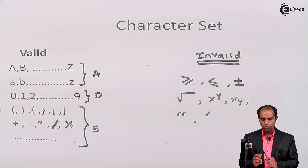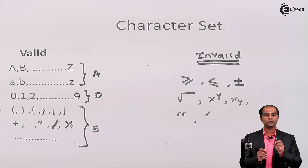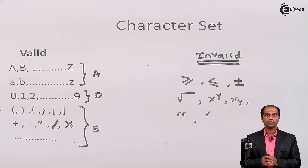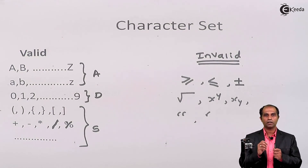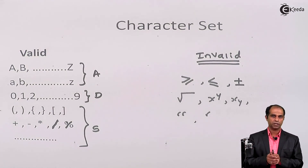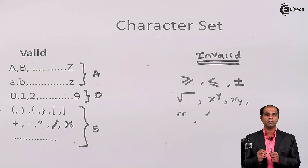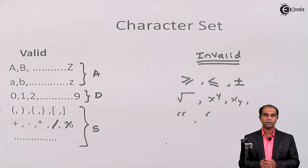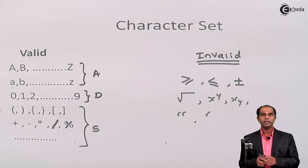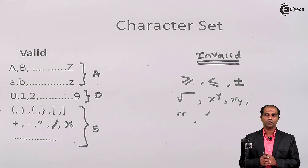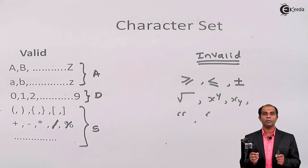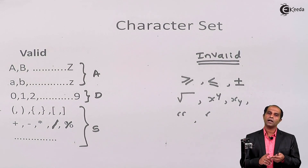Do remember the difference between a special character and an invalid character. A character which exists on the keyboard but is neither an alphabet nor a digit is said to be a special character. An invalid character is one that doesn't exist on the keyboard. To summarize: the character set of C language is a combination of alphabets, digits, and special characters, and invalid characters should be avoided. Thank you.